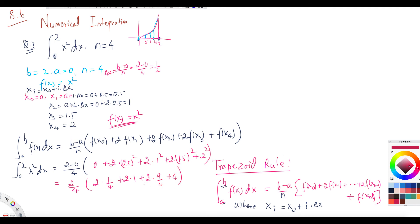Using a calculator to add those values, we get 11/4 = 2.75 approximately. This is the approximated value using the trapezoidal rule.